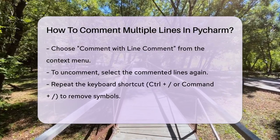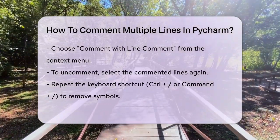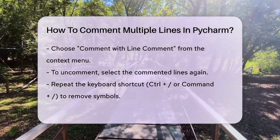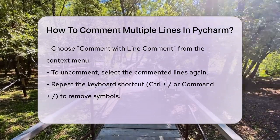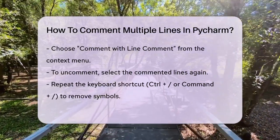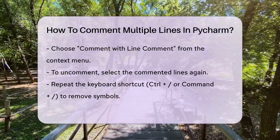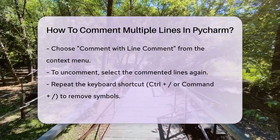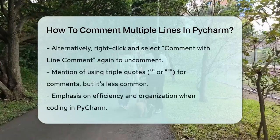To uncomment these lines, simply repeat the process. Select the commented lines and press Ctrl plus slash, or Command slash on a Mac, or right-click and choose 'Comment with Line Comment' again. This will remove the hash symbols, and your code will be uncommented.